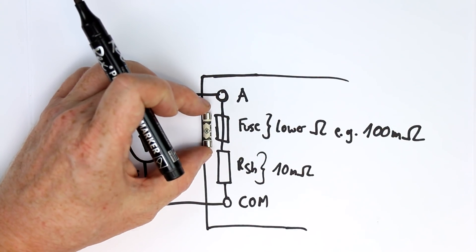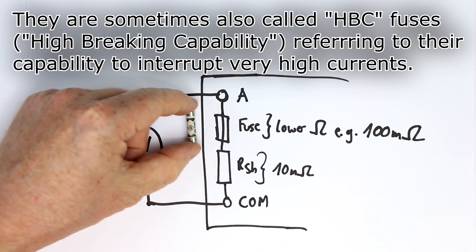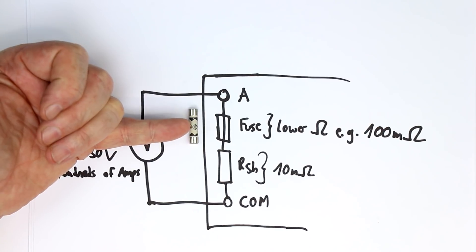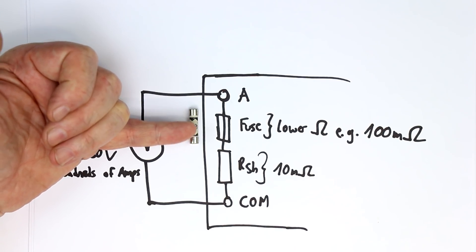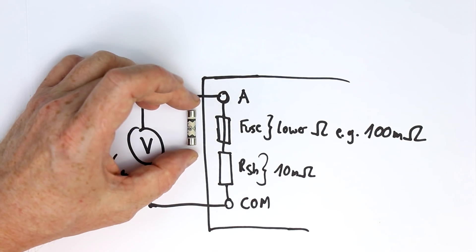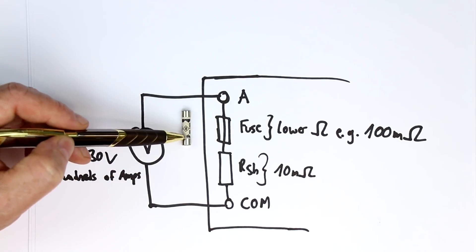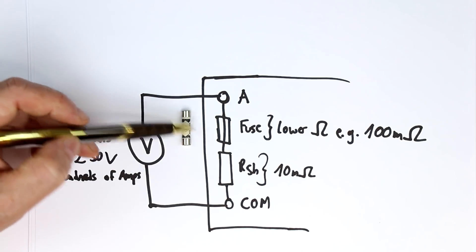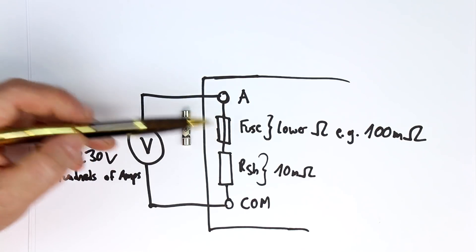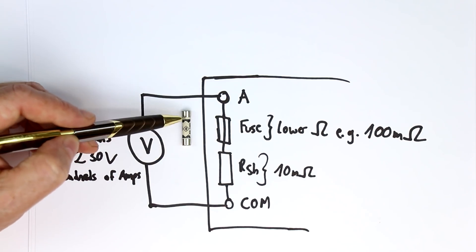So in comes HRC fuses—high rupture capability fuses. You can already see from how they look that first of all, they don't have a glass tube, but a ceramic tube. We'll open one of these in a minute to see what's inside. The task is that after the fuse wire inside has melted, and if then an arc starts to set in, they're somehow able to quench this arc and stop the current flowing through the plasma.